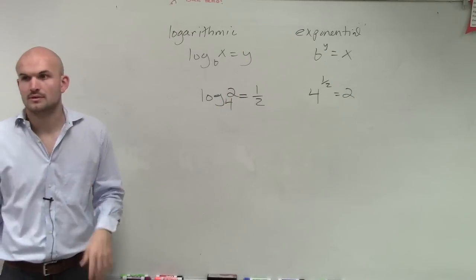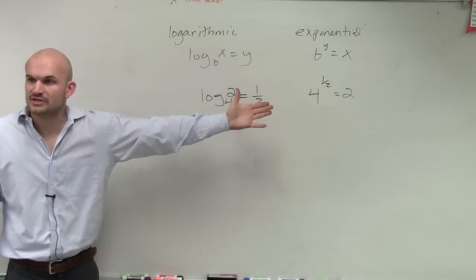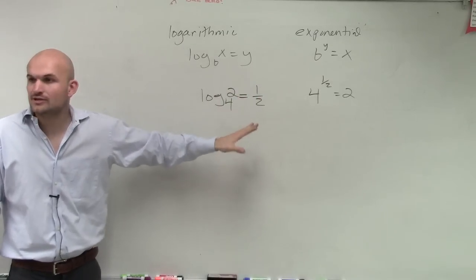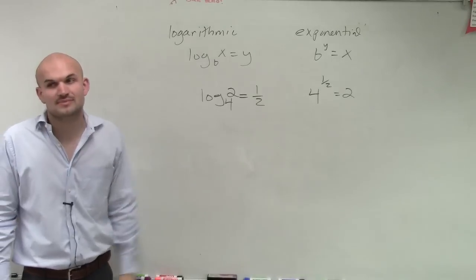Can you just list 5? Pretty much, yes. When you're writing it in logarithmic and exponential form, they're different forms, but exactly you're right. They say the same thing. They're representing the same thing.